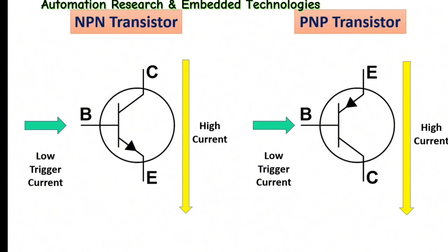NPN transistors allow electricity to pass from the collector pin to the emitter pin. They are represented in a schematic with a line for a base, a diagonal line connecting to the base, and a diagonal arrow pointing away from the base.